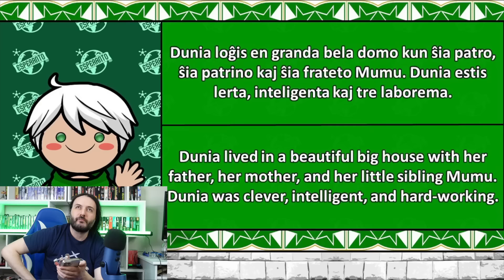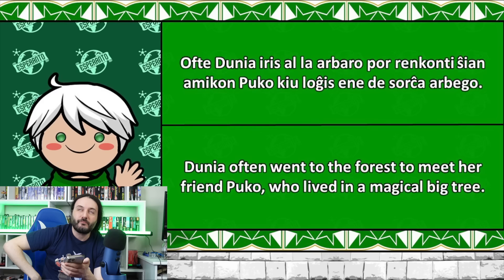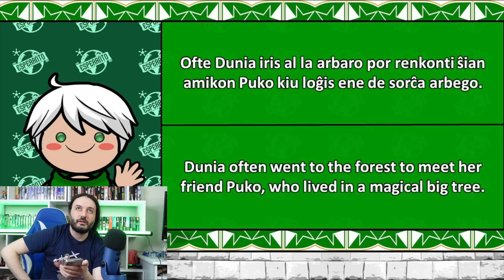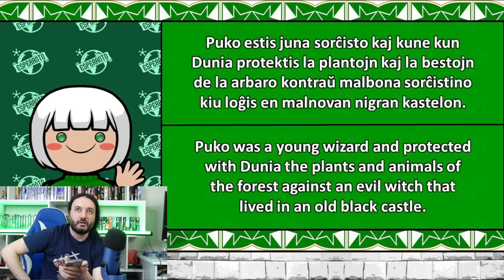Estis lerta, inteligenta, caetre laborema. Si amis legi dica in libroin, cae passi multa in joroin, en la biblioteco de siapatro. Of this part, I think this Dunia person seems to be like an intelligent girl, and I believe she spends a lot of time in the library — that would be my guess. The only word I know in Esperanto is the word for field, which is 'campo,' and that one is easy because it's 'campo' in Italian as well.